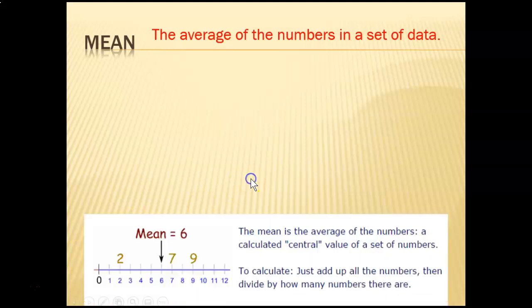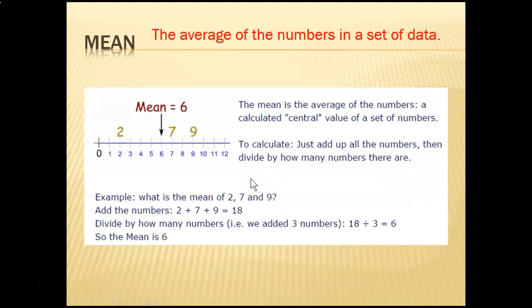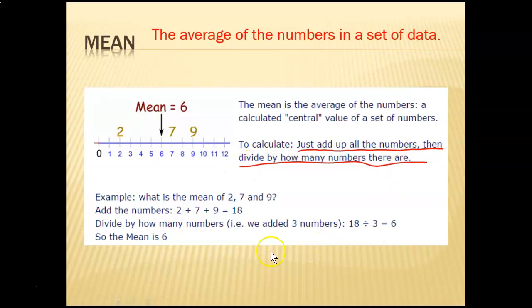It's the same way we find your average for your grades in class. We have to find the total first, and then divide. You don't have to copy this next little part, but just as a reminder: you add up all the numbers and then divide by how many numbers there are.